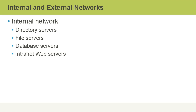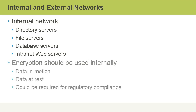An internal network will contain sensitive IT systems, including things like directory servers, like an Active Directory domain controller, file servers, database servers, and intranet web servers. Encryption should also be used for network traffic internally. Most networks tend to use it externally when transmitting email or connecting to an external website, but we should also consider that many network attacks occur from the inside.